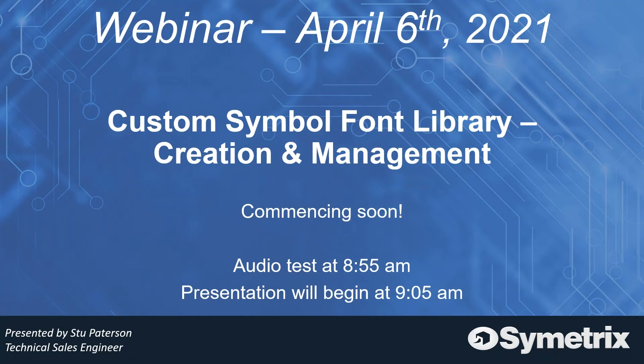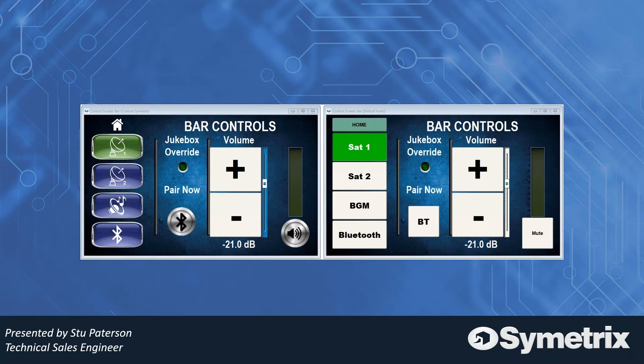Here are two examples. On the right is the default — you can see the home button and all the text you'd normally see when designing a control screen. On the left are images I imported. You can see the house button on the top left instead of the word 'home,' and I did my own images for the radio button, with an on state and an off state.